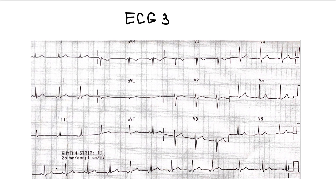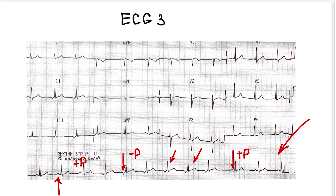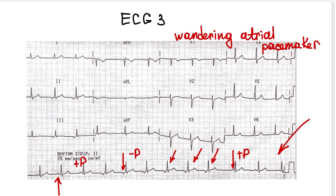Let's take a look at this ECG. What rhythm is present here? We look for the p-wave — it's there, but it varies within the same lead. We see a positive p-wave, a negative p-wave, and a different type of positive p-wave. The p-wave precedes the QRS complex, and the QRS complex is narrow, not widened or deformed. When we see different p-wave morphologies within the same lead, it's called wandering atrial pacemaker, meaning the rhythm source migrates through the atrium from one contraction to another.